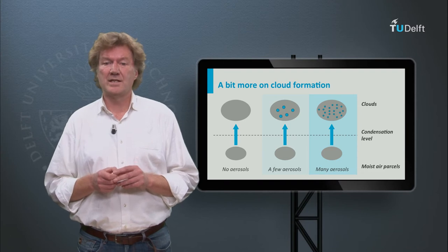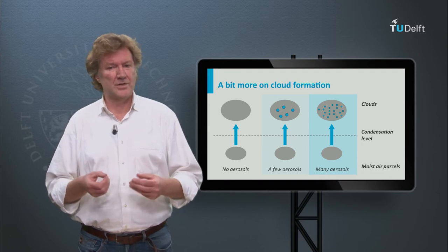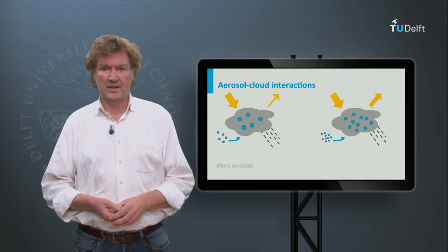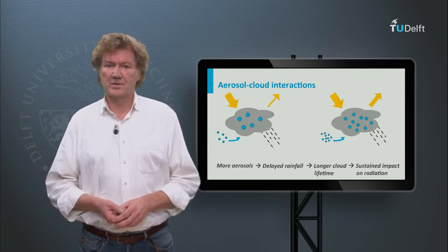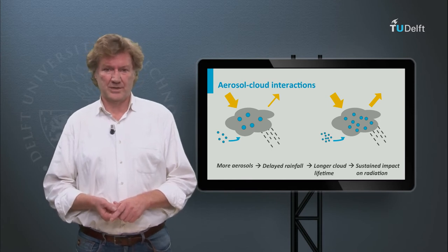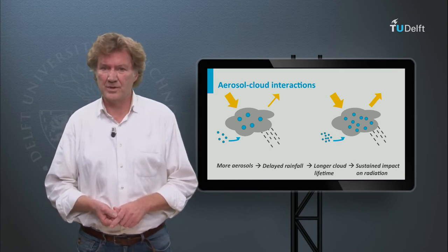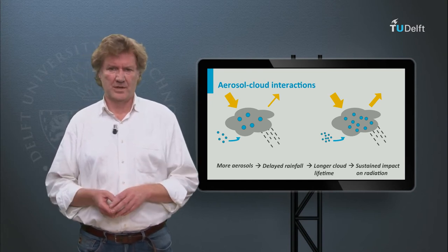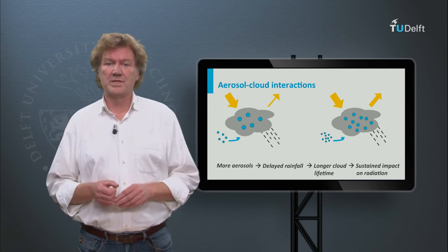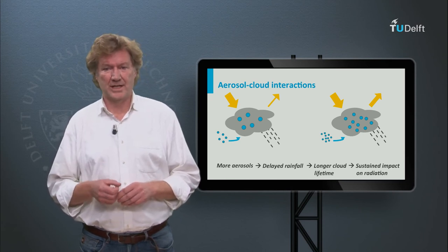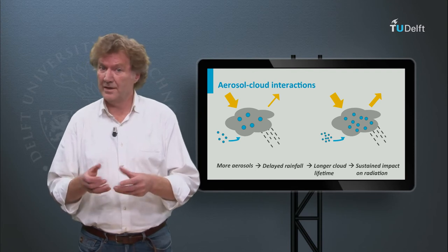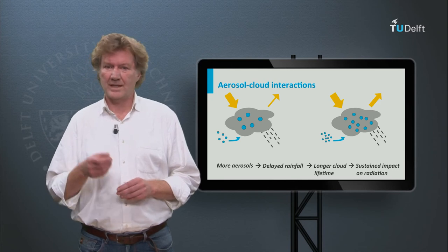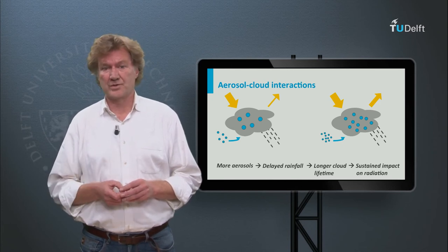Note that in the last two scenarios the clouds contain equal amounts of liquid water — it is only distributed over different numbers of droplets. The influence of aerosols on clouds matters for two fundamental reasons: a cloud with many small droplets reflects more solar radiation than one with fewer but larger droplets; and rainfall forms more easily in clouds with large droplets. Put differently, increasing the number of aerosols can lead to a longer cloud lifetime and therefore a longer cooling effect.